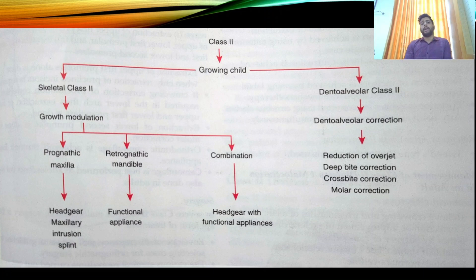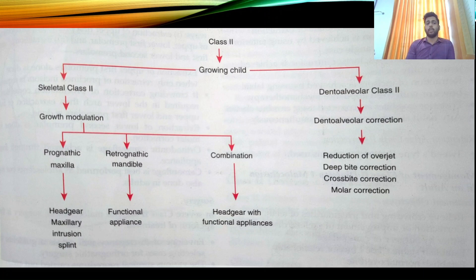Class 2 management is divided into growing patients and non-growing patients. In this chapter, we are dealing with growing patients. For growing patients, there are two categories: skeletal Class 2 and dental Class 2. For skeletal Class 2 in a growing patient, growth modification therapy is used, addressing three situations: prognathic maxilla, retrognathic mandible, and a combination of both.